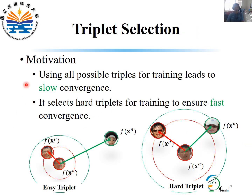However, using all possible triplets for training FaceNet leads to slow convergence, because there are many easy triplets that are easily satisfied and do not contribute to training. An easy triplet is one where the positive and negative can be easily distinguished — meaning the distance from the anchor to the negative is much larger than the distance from the anchor to the positive. To address this issue, this paper selects hard examples for training to ensure faster convergence. A hard triplet is one where the distance from the anchor to the negative is close to the distance from the anchor to the positive.